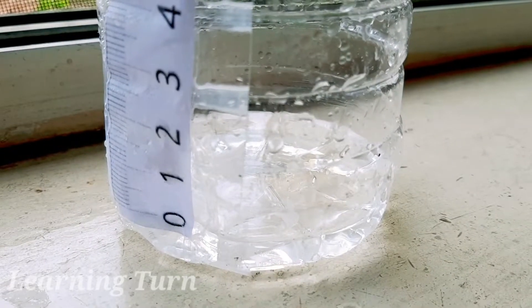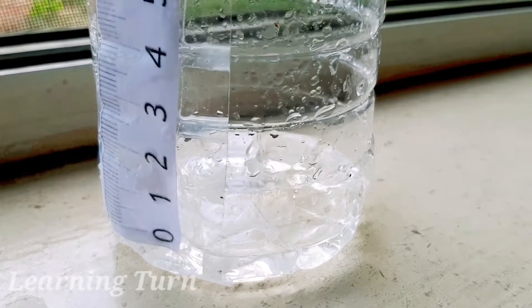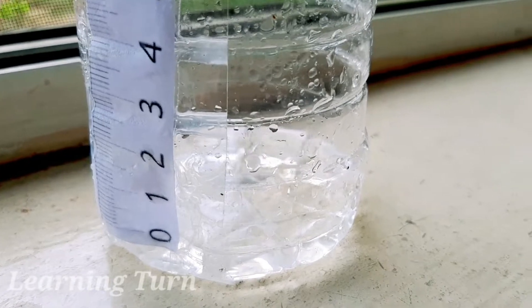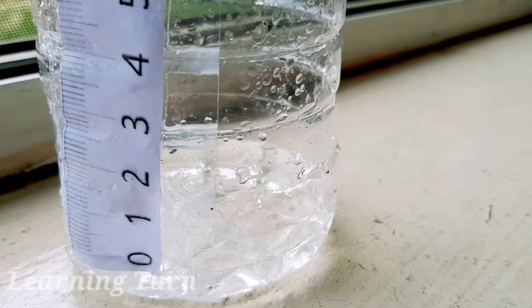Fill the bottle with water up to the zero mark on the ruler, which should be above the bumps at the bottom of the bottle. The bumps would otherwise affect the measurement.